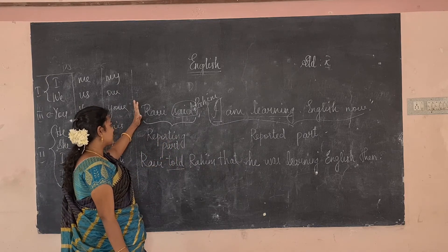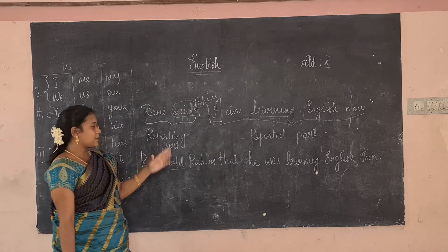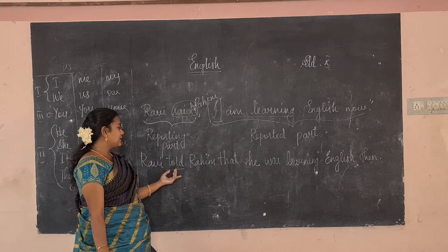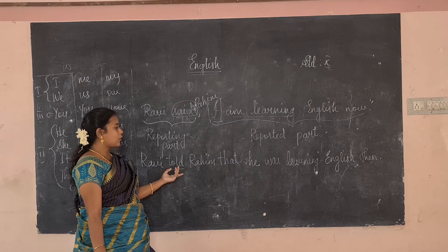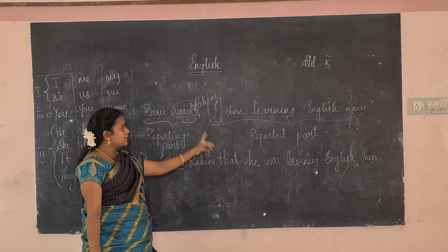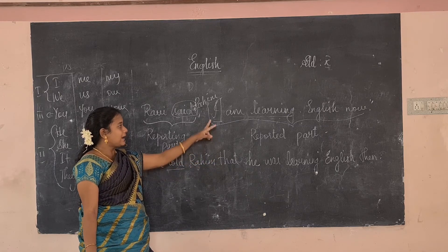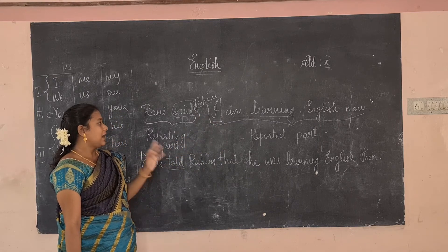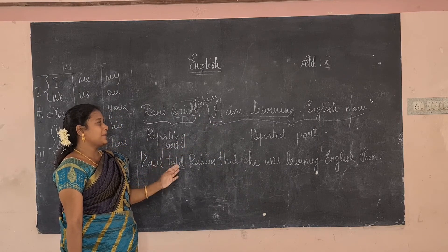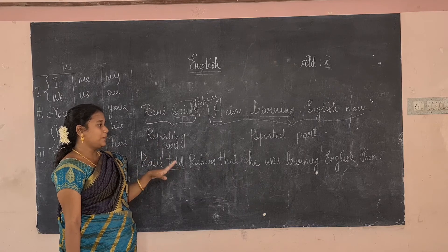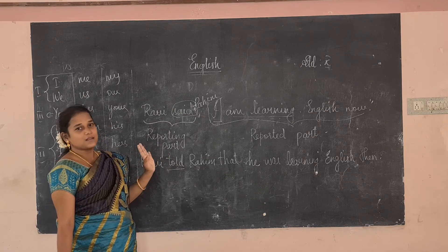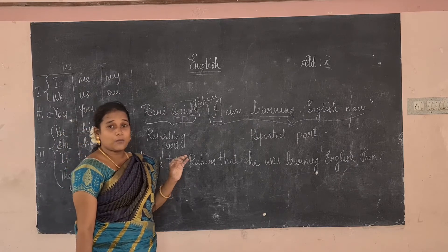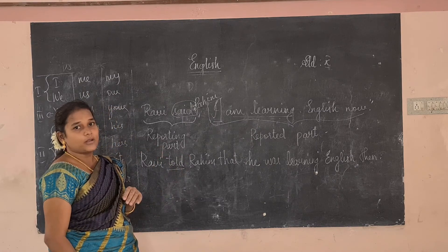So this is how to change direct into indirect speech for a statement: check the reported part, write the suitable word, join both sentences using 'that', change first person to third person, and change present tense to past tense and past tense to past perfect.